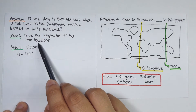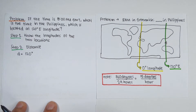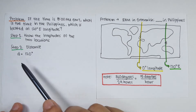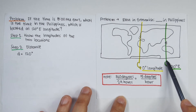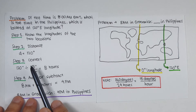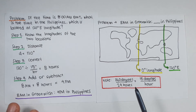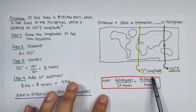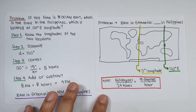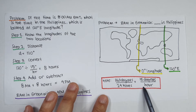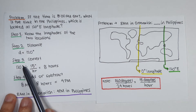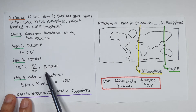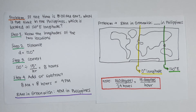Step number two is to get their distance apart in terms of longitude. That distance is simply 120 degrees — from 0 to 120, that's 120 degrees. Step number three is to convert. Again, the Earth is 360 degrees and in a day we have 24 hours, so that's 15 degrees per hour. Every 15 degrees of longitude is 1 hour of time difference. So 120 degrees divided by 15 degrees per hour equals 8 hours — the time difference between Greenwich and the Philippines.